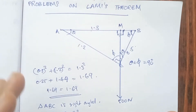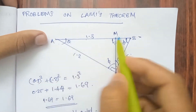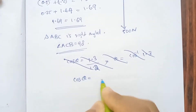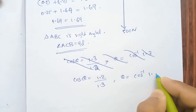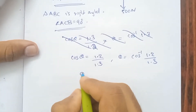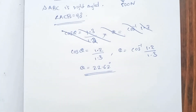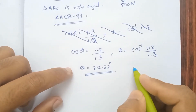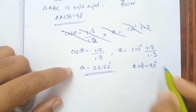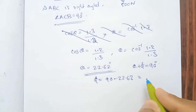We start with the triangle: cos theta equals adjacent by hypotenuse, which is 1.2 divided by 1.3. Therefore theta equals cos inverse of 1.2 divided by 1.3, which gives 22.62 degrees. Since theta plus phi equals 90 degrees, phi equals 90 minus 22.62, which is 67.38 degrees.